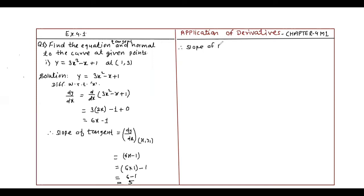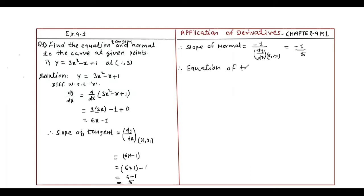Slope of tangent is equal to dy by dx equals 6x minus 1; at (1, 3) that gives 5. Therefore slope of normal is equal to minus 1 upon dy by dx at (x1, y1) equals minus 1 upon 5.